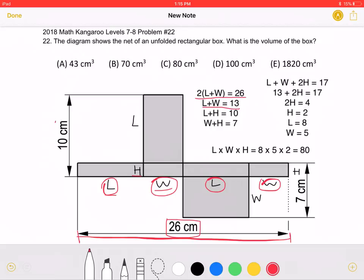Now if we look over here, 10 cm, this is also equal to the length plus the height, which means the length plus the height is equal to 10. Here, 7 cm is equal to this height plus width.